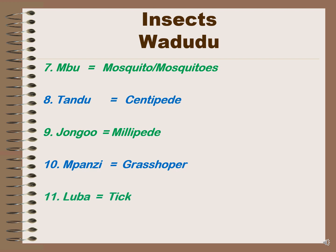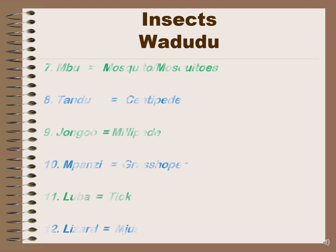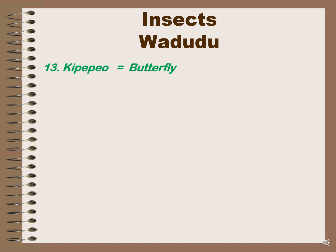'Luba' is tick. 'Mjusi' is lizard. All these insects don't have a separate plural or singular form — they are the same in both forms. Number 13, 'kipepeo' is butterfly. 'Chawa' is lice.